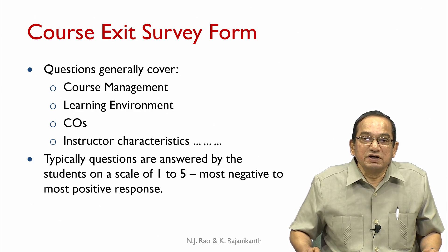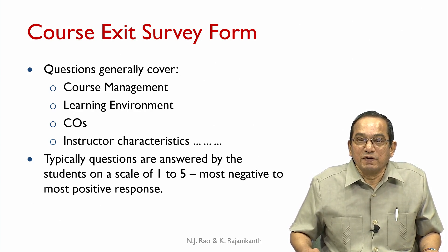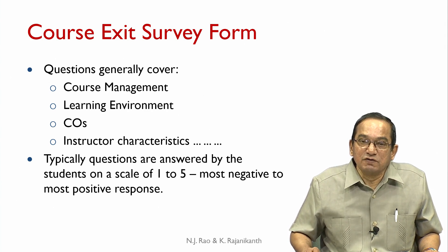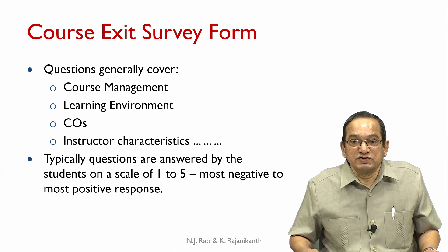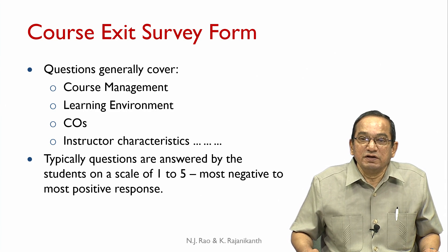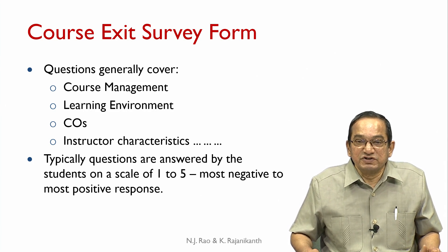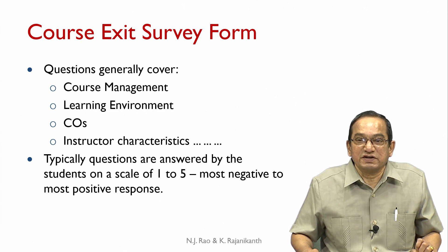The general topics covered in a course exit survey form would be about four: course management, learning environment, course outcomes, and instructor characteristics. If instructor characteristics are being collected in a separate survey, the instructor can delete this aspect from the course exit survey form. But it is typical to include this aspect also in a course exit survey form.